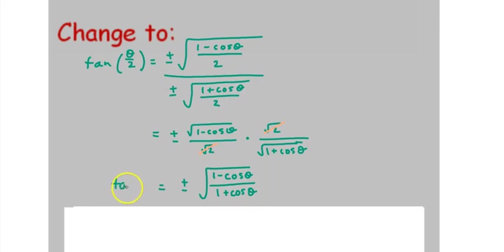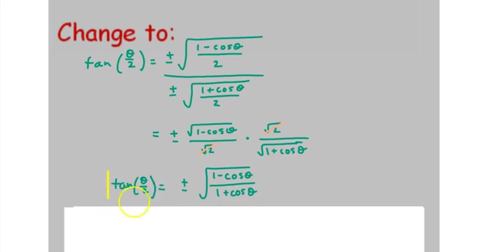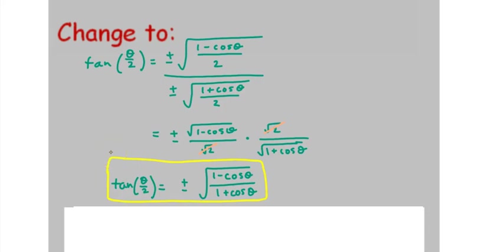And that is our tangent half angle identity. If you remember that the sine identity has a minus in it and the cosine identity has a plus in it, and that tangent is sine over cosine, hopefully that will help you remember to put the minus on top and the plus on the bottom.